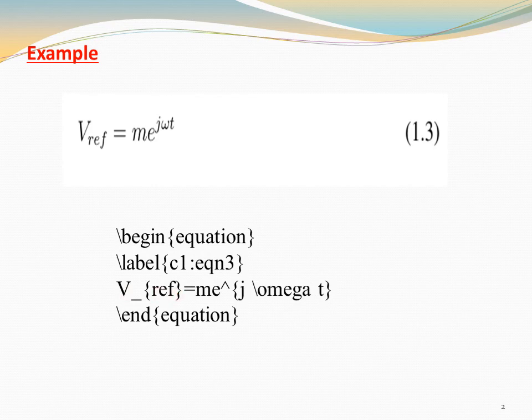V_ref equals me^{j\omega t}. Then end with \end{equation}. Execute the commands and get the output.